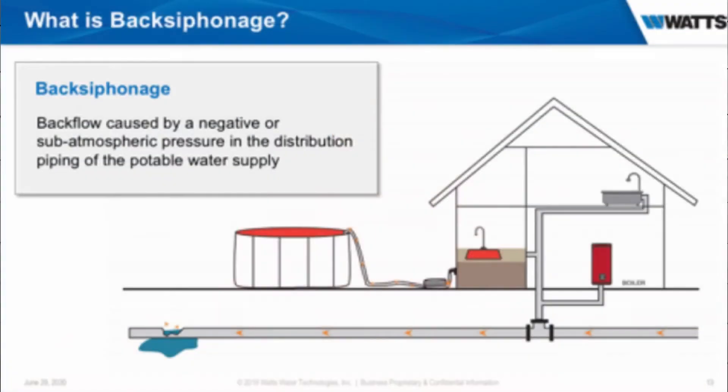Back siphonage — what is it? Back siphonage is caused by a negative or sub-atmospheric pressure in the distribution piping of the potable water supply. Imagine if you're in a high rise and there's a big fire in the building next to you, and they hook up a bunch of fire trucks to it. They start sucking water out of that main — it's going to back siphon and pull the water out of your building. If you have the proper backflow preventers in place, that doesn't happen.